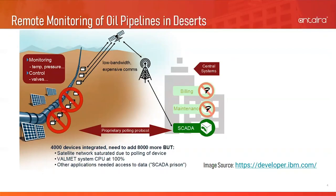The SCADA saw these timing gaps as error conditions because the polling and response didn't happen in a preset time interval. Secondly, it wasn't feasible to expand capacity by adding more devices. Since the SCADA was already connected to the existing 4,000 devices — pressure or temperature sensors or actuators mounted on the oil pipeline — when the SCADA tried polling all of these devices at once, the available bandwidth on the communication link between the satellite and the SCADA was saturated. The satellite networks were considered expensive and low bandwidth. Lastly, different departments such as billing or maintenance weren't able to check the status of the oil pipeline directly; they had to rely on the SCADA to do the job. All these challenges led to the creation of MQTT.